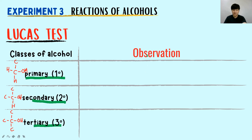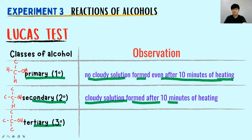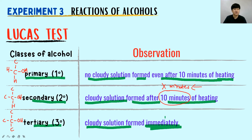For the observation of the Lucas test in primary alcohol: there will be no cloudy solution formed even after 10 minutes of heating — you must mention both the time and the heating. For secondary alcohol: cloudy solution forms after some minutes of heating (not necessarily exactly 10 minutes — it can be less, such as 5, 6, or 7 minutes). For tertiary alcohol: the cloudy solution forms immediately.